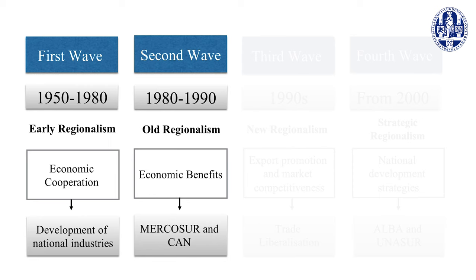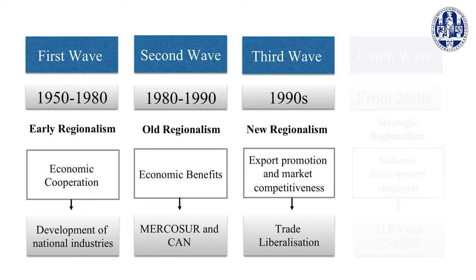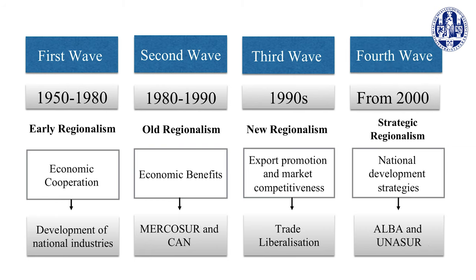This second wave led to the creation of Mercosur and CAN, which were initially modeled after the European Union. In the 1990s, the third wave of regionalism took place and was called New Regionalism. It tried to respond to the 1970s and 1980s years of economic crisis and stalemate by opening up integration systems and introducing export promotion and market competitiveness. At the time, regionalist efforts were aimed at increasing the region's attractiveness in the global political economy, especially by means of trade liberalization. Then, with the turn of the millennium, the latest wave of regionalism kicked in and has been labeled Strategic Regionalism. As many countries turned to the left and adopted a national development strategy, new regional integration schemes such as ALBA and UNASUR were created.